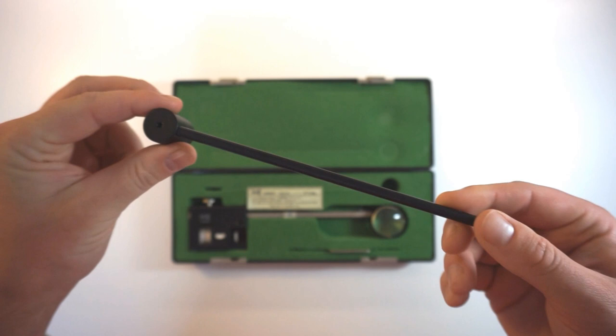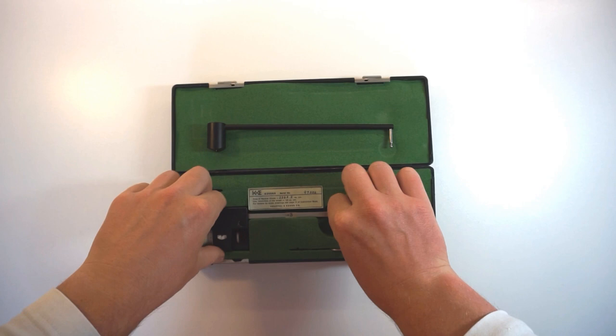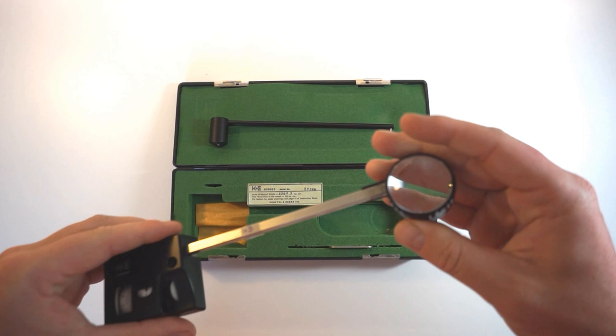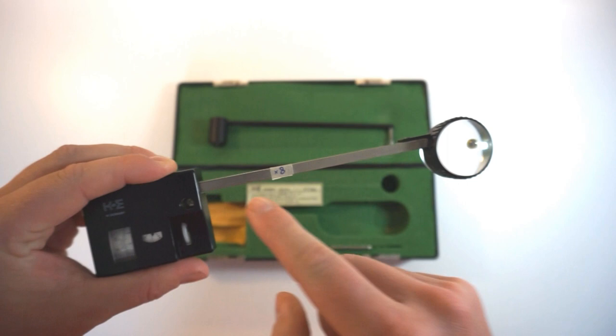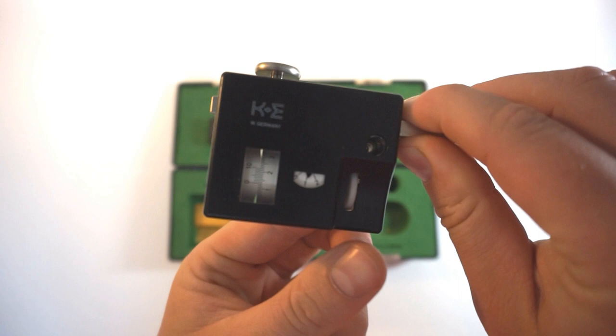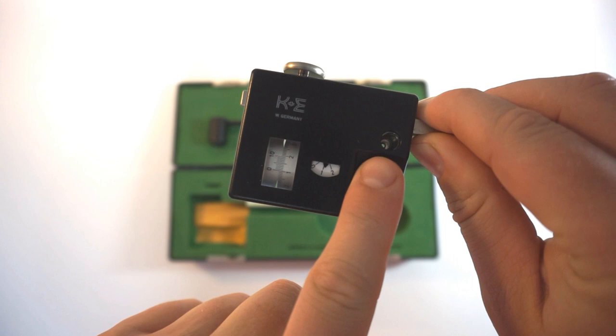The second part consists of this circular magnifying glass and it has a rotating wheel and also a little ball bearing. We have a long metal arm and this box which has a little gauge inside it. When I move this wheel, this gauge moves. And we have another wheel here as well which doesn't affect the gauge.